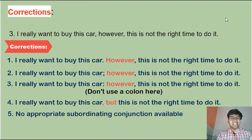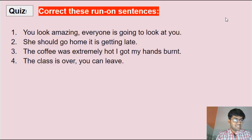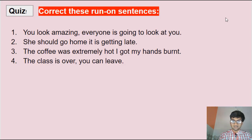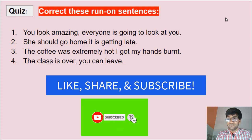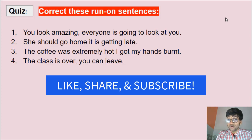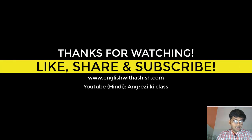So that is how you correct a run-on sentence. Now you know what a run-on sentence is, how it looks, how many types there are, and how to correct them. On your screen are some examples of run-on sentences for you to correct — if you get them right, you've mastered the topic. Write your answers in the comment section below and feel free to ask questions. If you liked the video, give it a thumbs up, subscribe to the channel, and hit the notification bell. See you guys very soon — keep learning, have fun!